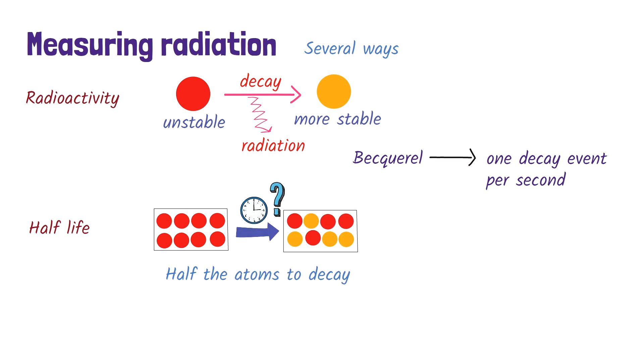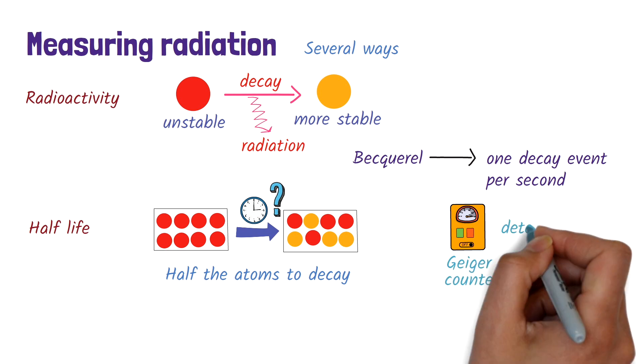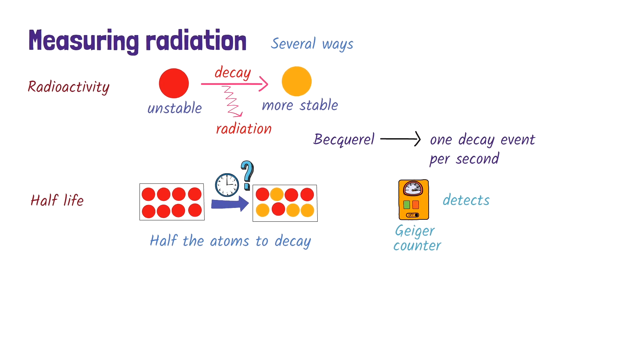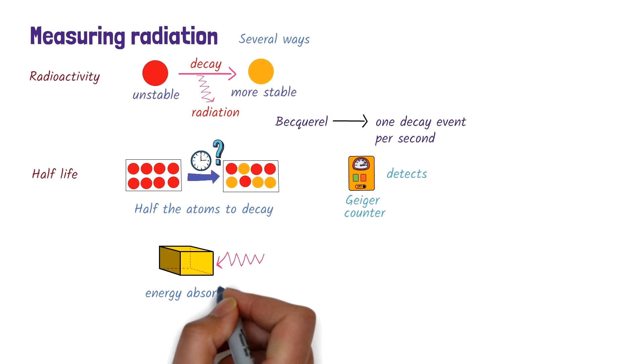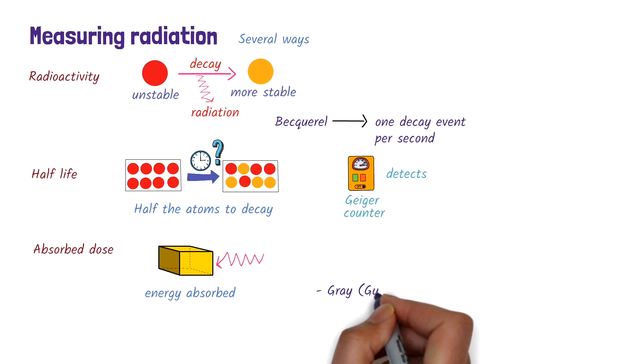To detect radiation, a Geiger counter is often used, and is useful for checking if radiation is present. Now, if we want to know how much radiation energy something has absorbed, we look at the absorbed dose. This is measured in grays, where one gray equals one joule of radiation energy absorbed per kilogram of matter.